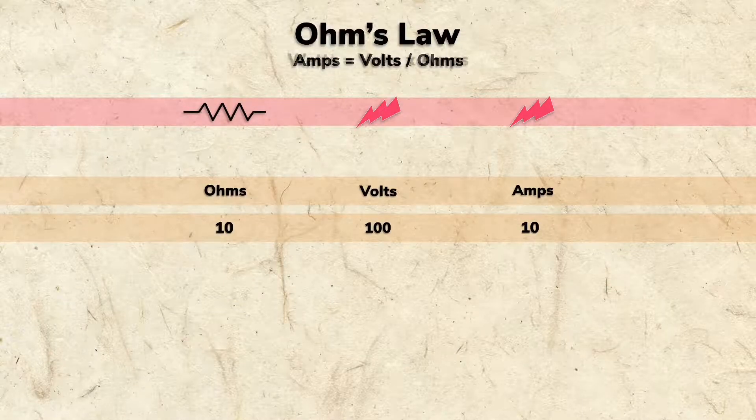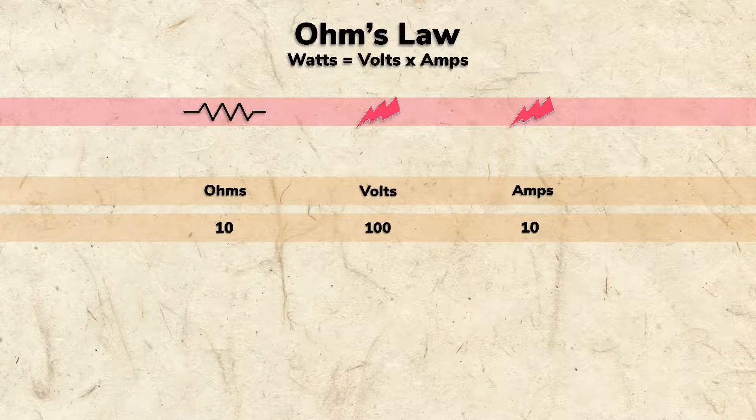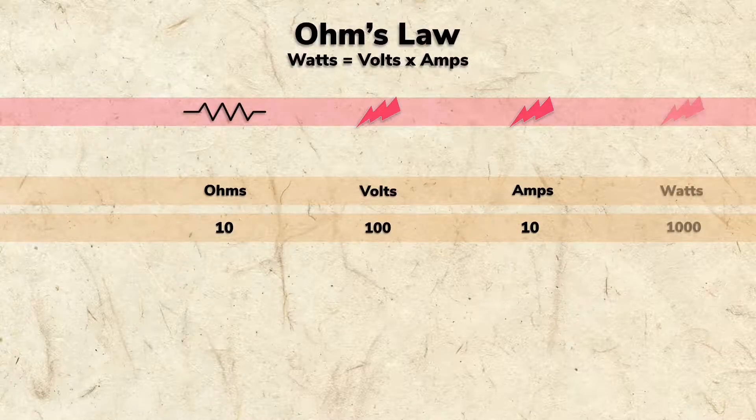And since watts equals volts times amps, 100 volts at 10 amps equals 1,000 watts.